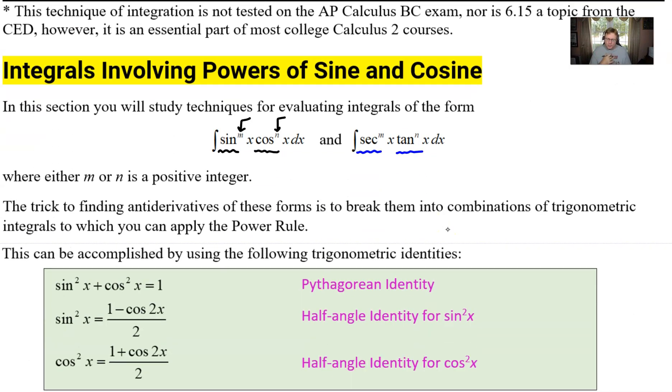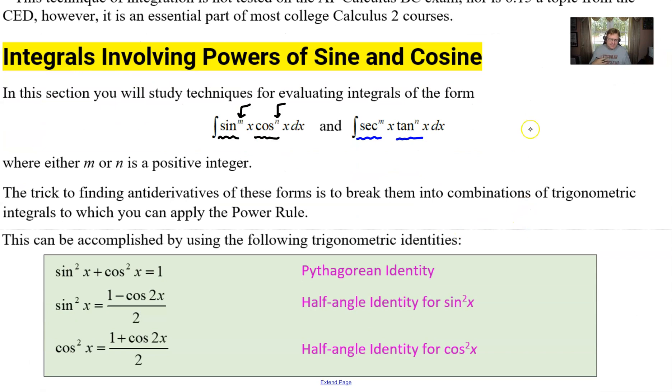So basically what's going to happen is that we are going to have to be very confident in using a few trig identities. One of the trig identities is probably something that you're very familiar with and that's our good friend the Pythagorean identity. It finds itself showing up all the time with these trigonometric integrals but there are a pair of other trigonometric identities that you're probably not quite as familiar with.